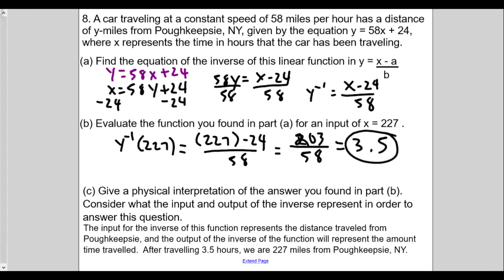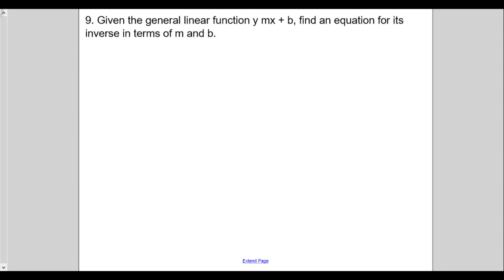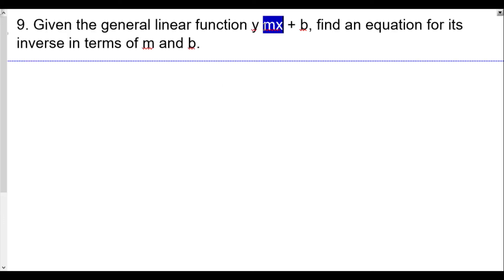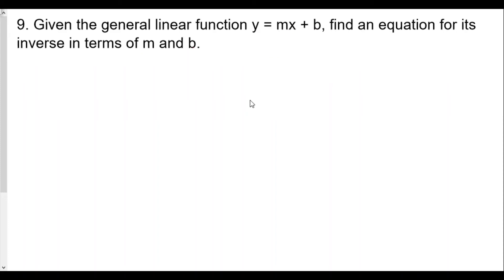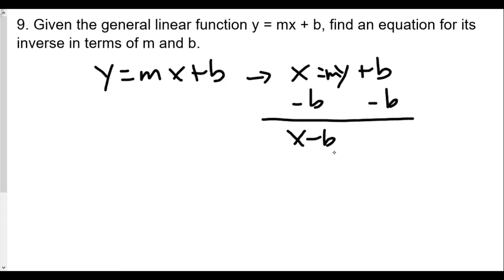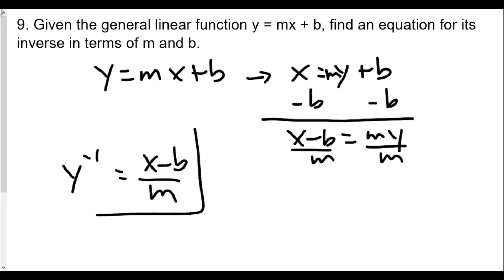Finally, question number nine: given the general linear function y equals mx plus b, find an equation for its inverse in terms of m and b. We start with y equals mx plus b, switch x and y to get x equals m times y plus b, then subtract b on both sides to get x minus b equals m times y, then divide both sides by m. Therefore the inverse equals x minus b over m.